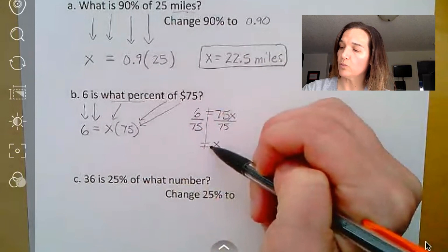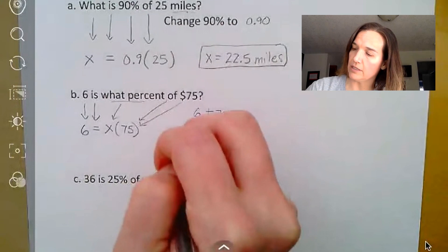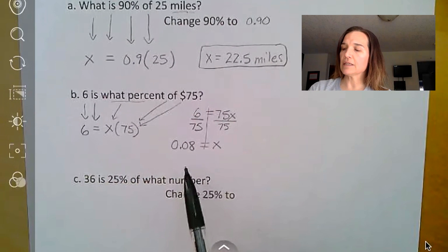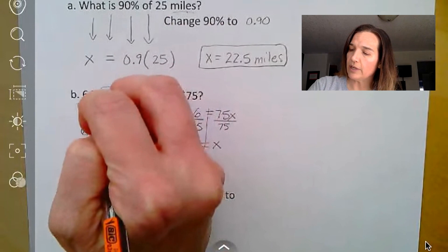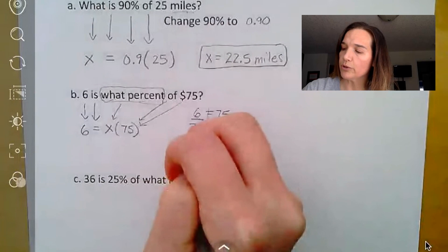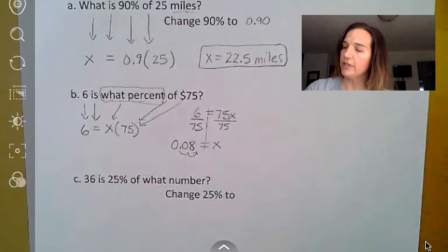You end up with x equals, because 75 divided by 75 is 1x, and 6 divided by 75 is 0.08. Now that is the answer in decimal form. This is the one problem we have to pay attention. When it says what percent, we need to turn it into a percent. And the way to do that is to multiply by 100. The shortcut is to move the decimal point back two places to the right.